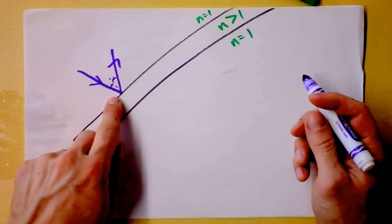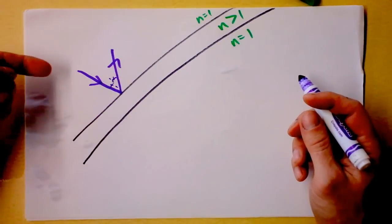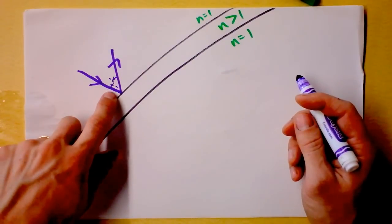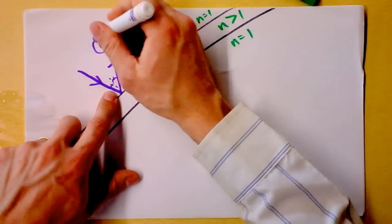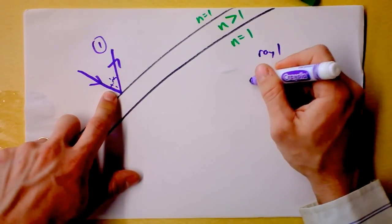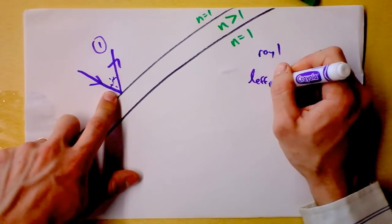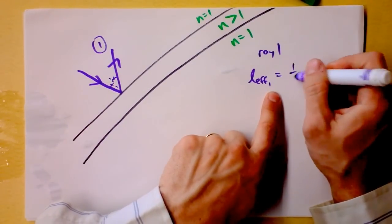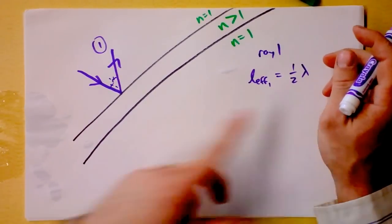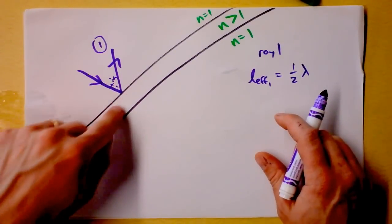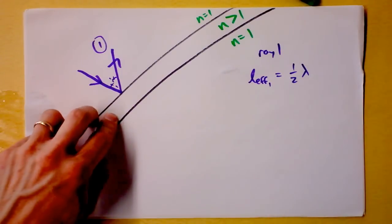But, did it experience a phase shift or not? Well, it looks like it's hitting a fixed surface, because this is a higher index of refraction, so it is going to experience a phase shift. Ray one, ray one, I'm going to say its effective path length is equal to, well, I guess it's going to be one half of the wavelength, because it's a phase shift of 180 degrees when you hit off of a higher index of refraction and reflect.